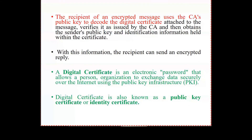So when you receive a message, you should contact the Certificate Authority to get the public key and decrypt the certificate. When you decrypt the certificate, you can see who sent you the message, what their public key is, and their identification information. Both the sender and receiver need to contact the CA. The sender contacts CA to get a digital certificate, and the receiver contacts CA to decrypt and verify the person.